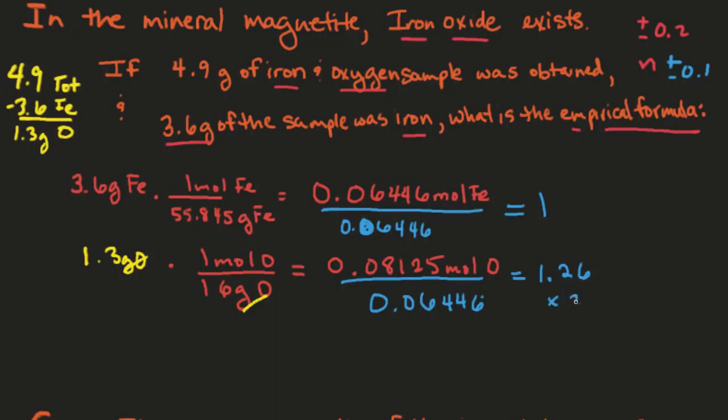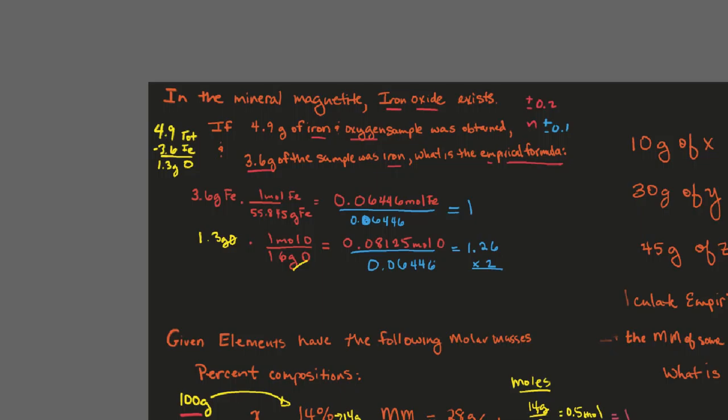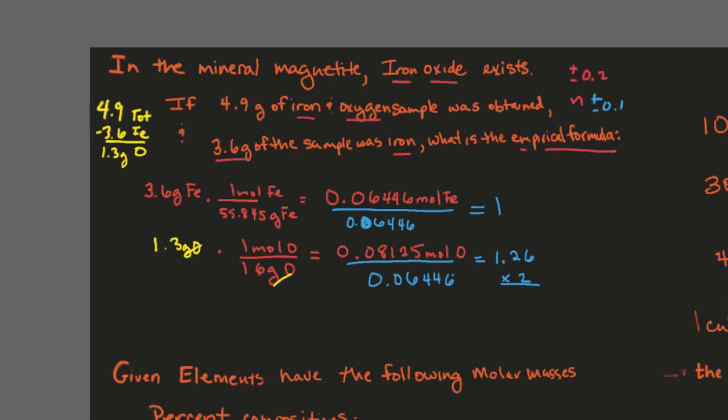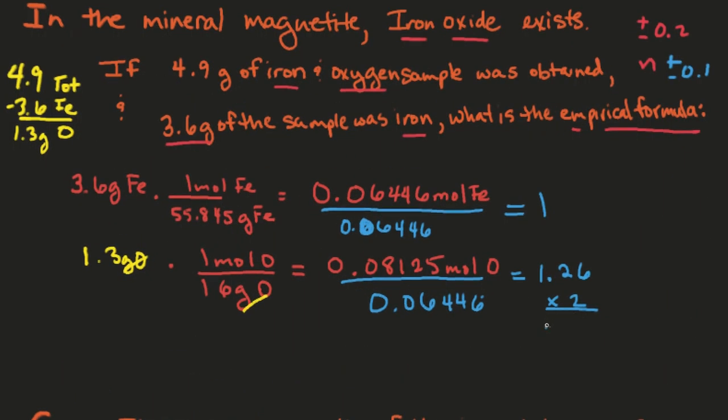So if I did that times 2, that would give me 2.52. That doesn't work because we need to be within plus or minus 0.1 or 0.2 of a whole number. So let's try 1.26 times 3, and that gives you 3.78, which is not going to work either.